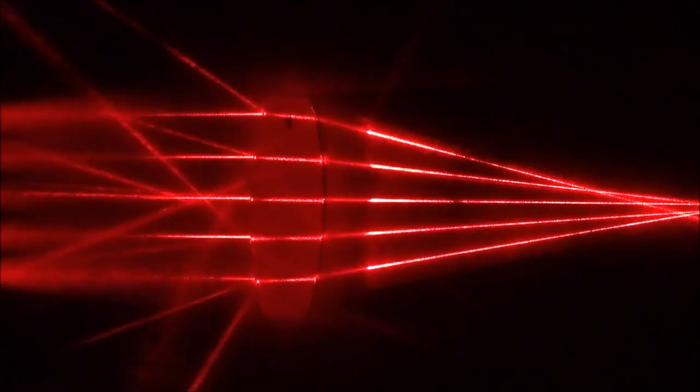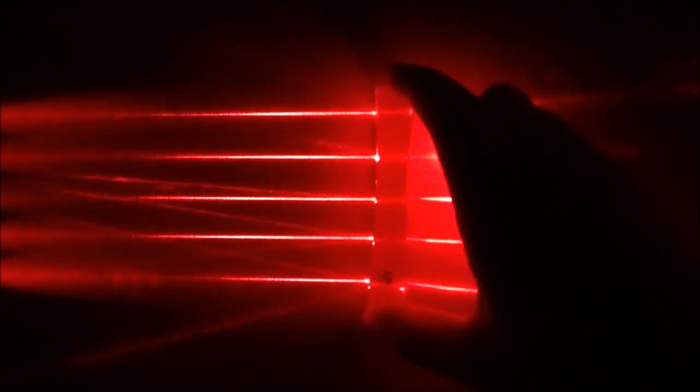Now the opposite to this is what we call a diverging lens. As light goes through a diverging lens, it all diverges and starts to spread out. This is also called a concave lens.